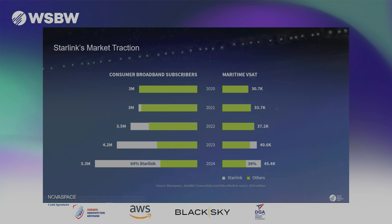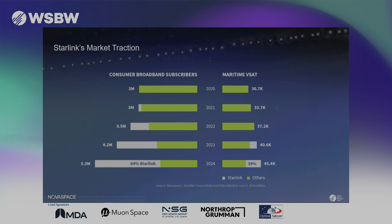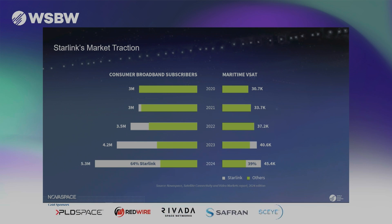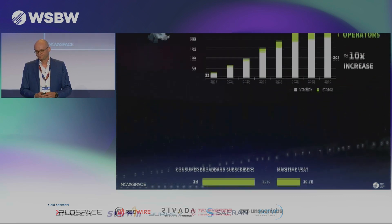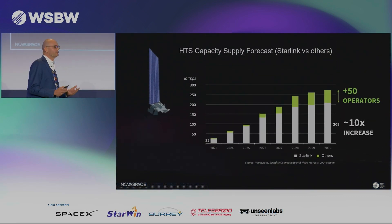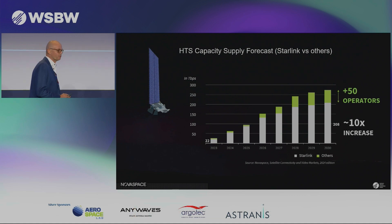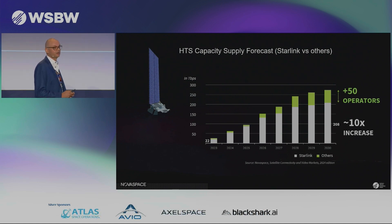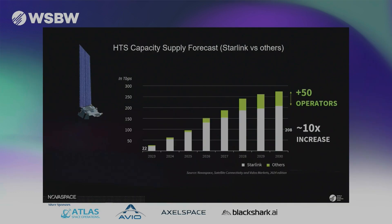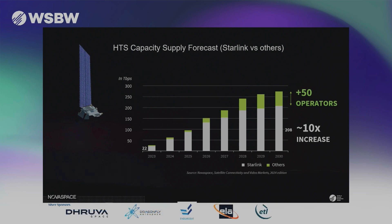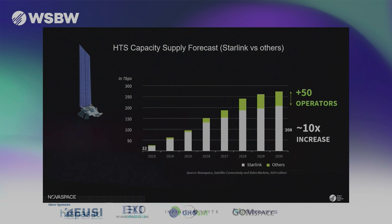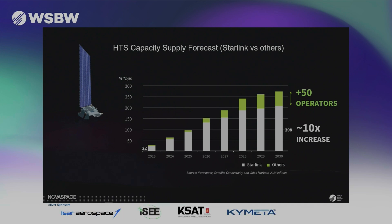Another important point, also demonstrated on this chart, is that Starlink is not only capturing share from existing players but also growing the overall market — there's a very positive effect to that. Supply is typically considered as one of those indicators of the competitive positioning of operators, and with the continued massive deployments of Starlink, they should sustain their competitive lead in the short to medium term, especially as it takes a number of years for other players to launch — more like post-2026 to have additional supply additions coming to the market.